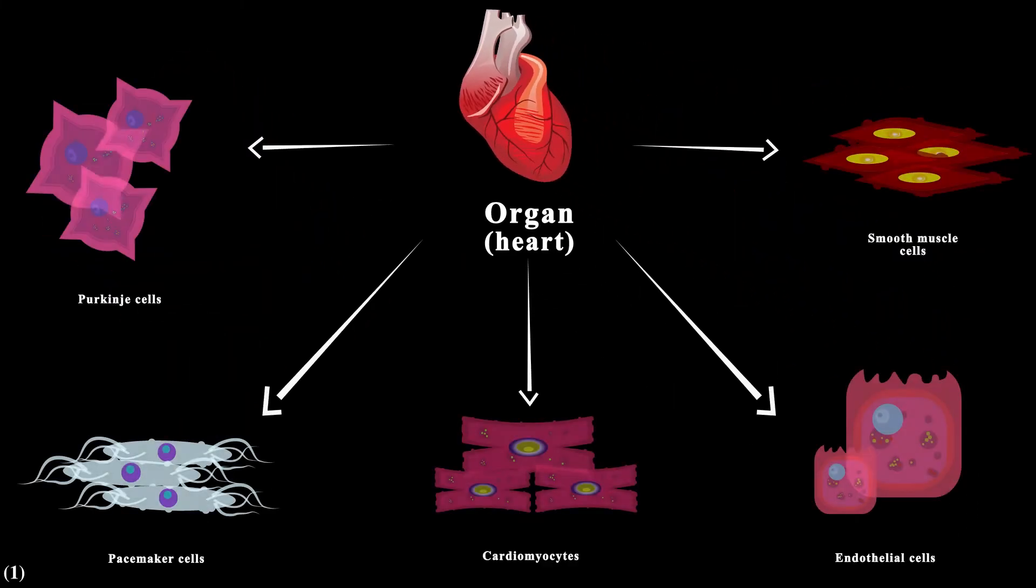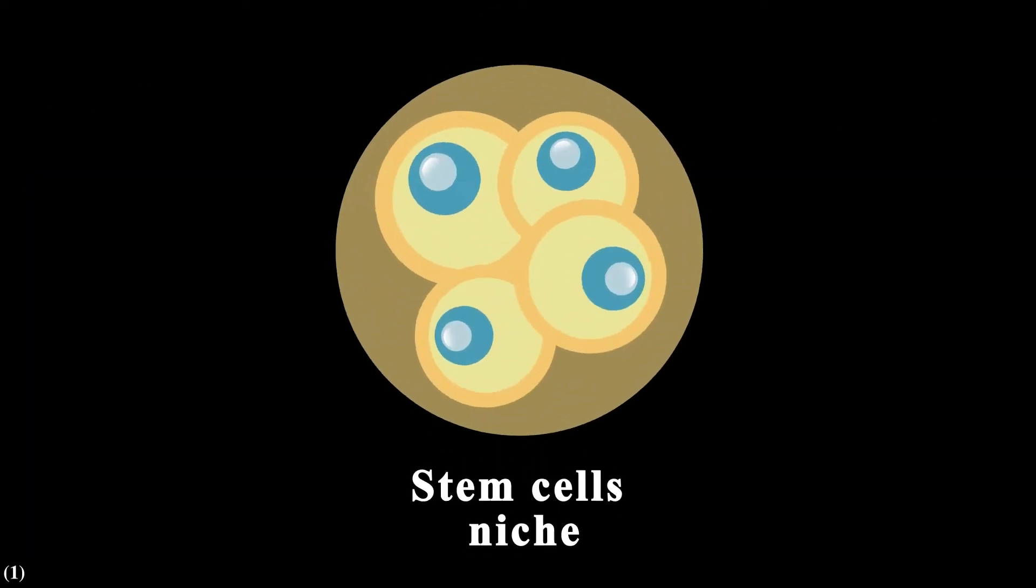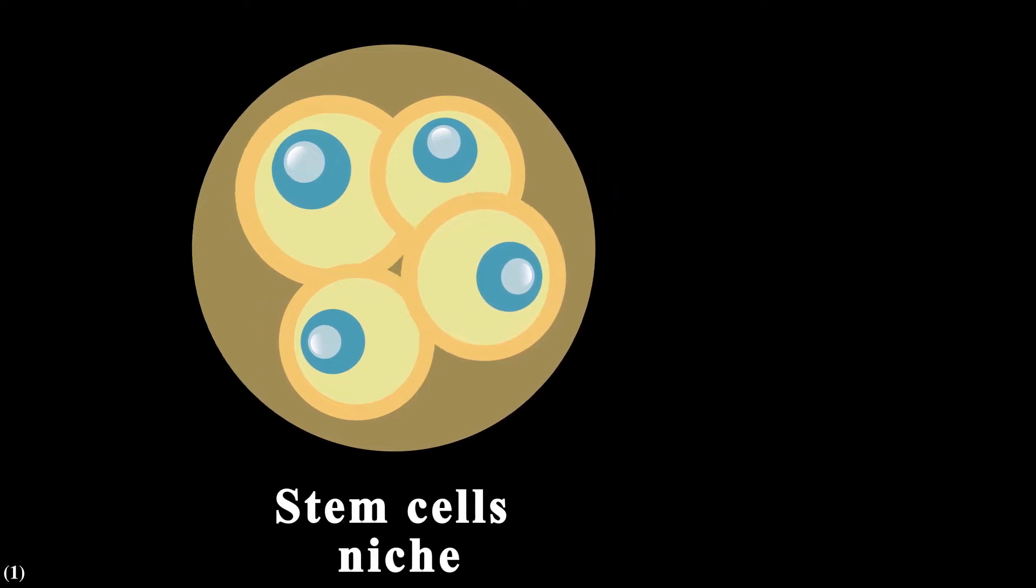Obviously, our tissues haven't been made with a single type of cells. In contrast, they consist of so many different cells that are specialized to do various specific jobs. But they cannot just make such complex structures out of nowhere without any instructions.